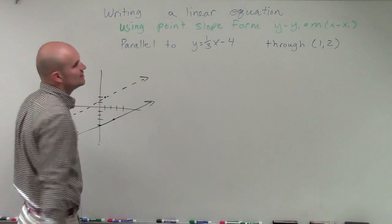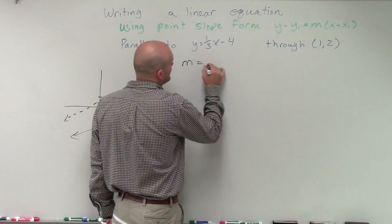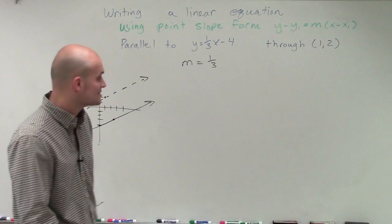So the main important thing when dealing with parallel lines is we know that the slopes have to be exactly the same. So I'm going to say my slope m equals 1 third. And that is true for all parallel lines. They always have the exact same slope.